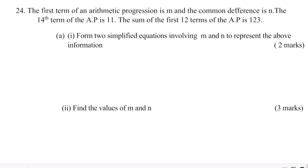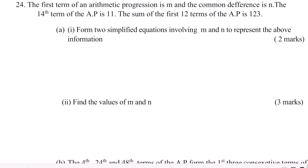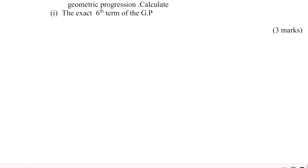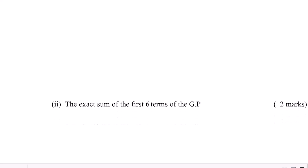Part A, number one: form two simplified equations involving M and N to represent the above information. Number two: find the values of M and N. Then part B: the 4th, 24th and 48th terms of the AP form the first three consecutive terms of a geometric progression. Calculate, one, the exact sixth term of the GP, and two, the exact sum of the first six terms of the GP.